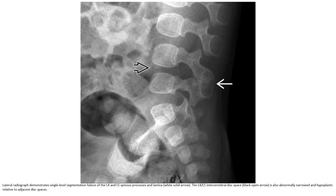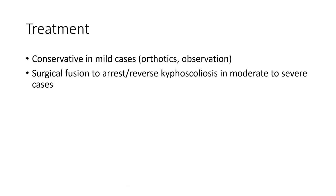AP radiograph demonstrates single-level segmentation failure of the spinous process and laminae. The intervertebral body space is also abnormally narrow and kyphoplastic relative to the adjacent level. In this case, surgical intervention for children may be considered to address progressive scoliosis in moderate to severe cases. Thank you.